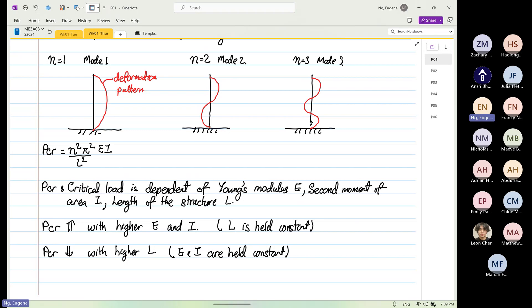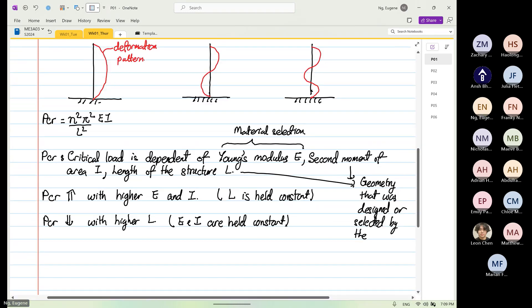So what I'm trying to say, if the P critical is what you calculate, that is dependent on young's modulus, you can see young's modulus over here is dependent on your material selection, what material you use. And both the L and the second moment of area is based on the geometry that was designed or selected by the engineer, like yourself in the near future. So you select what material, your cross-sectional area, and your length is what you select also. And this will dictate the critical load.